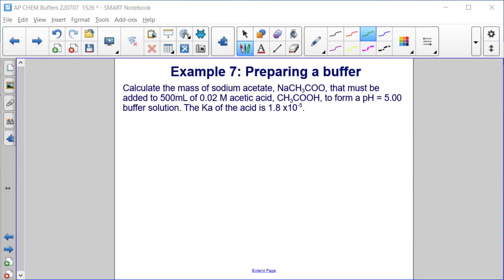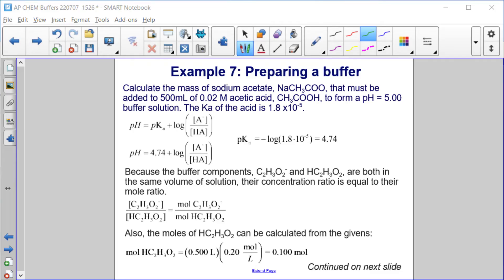Example 7, preparing a buffer. Calculate the mass of sodium acetate, NaCH3COO, that must be added to 500 milliliters of 0.02 molar acetic acid, CH3COOH, to form a pH equal to 5 buffer solution. The Ka of the acid is 1.8 times 10 to the minus 5. First I have the Henderson-Hasselbalch equation where pH equals pKa plus log of the base over the acid. pKa is the negative log of the Ka or 4.74.